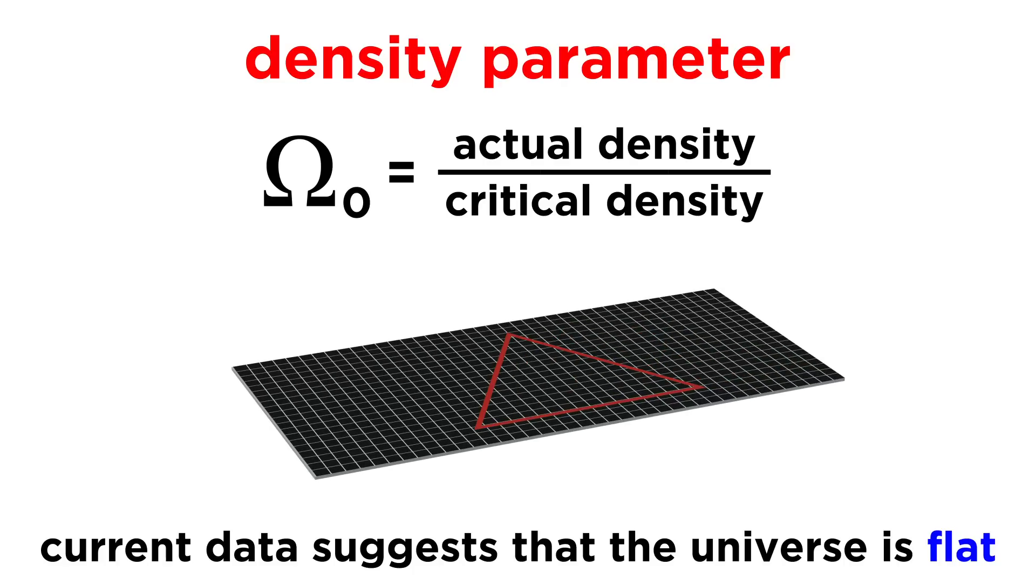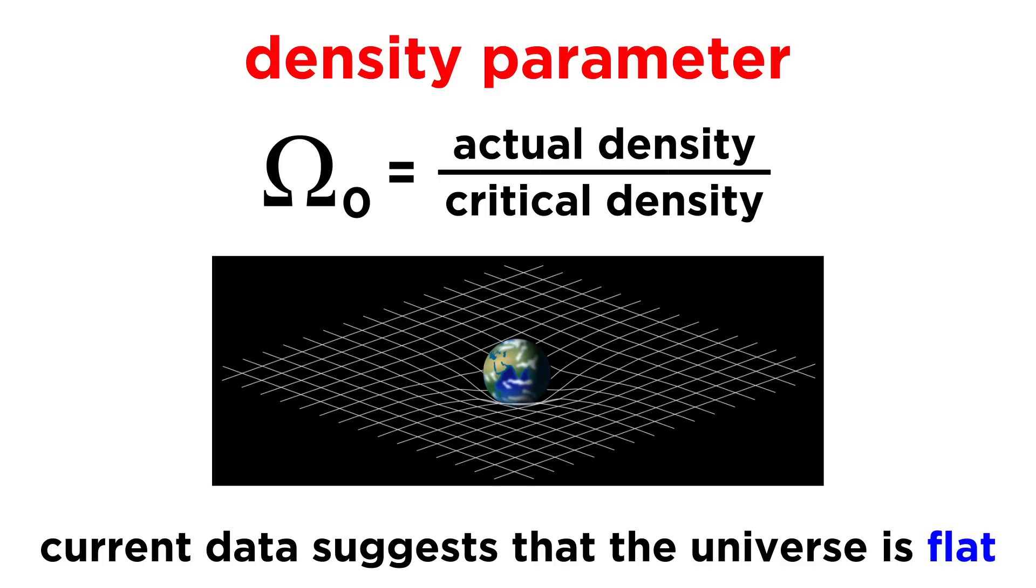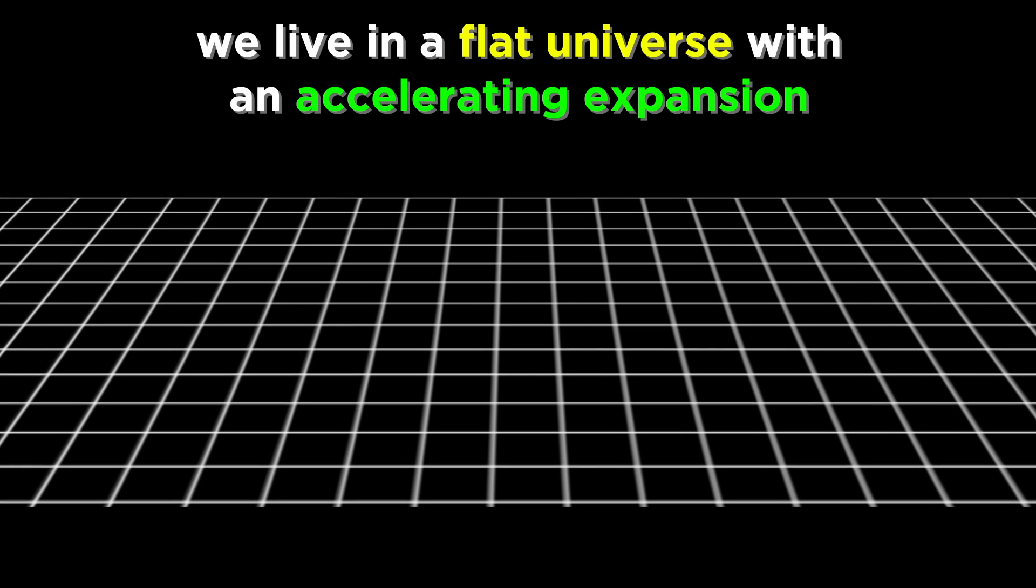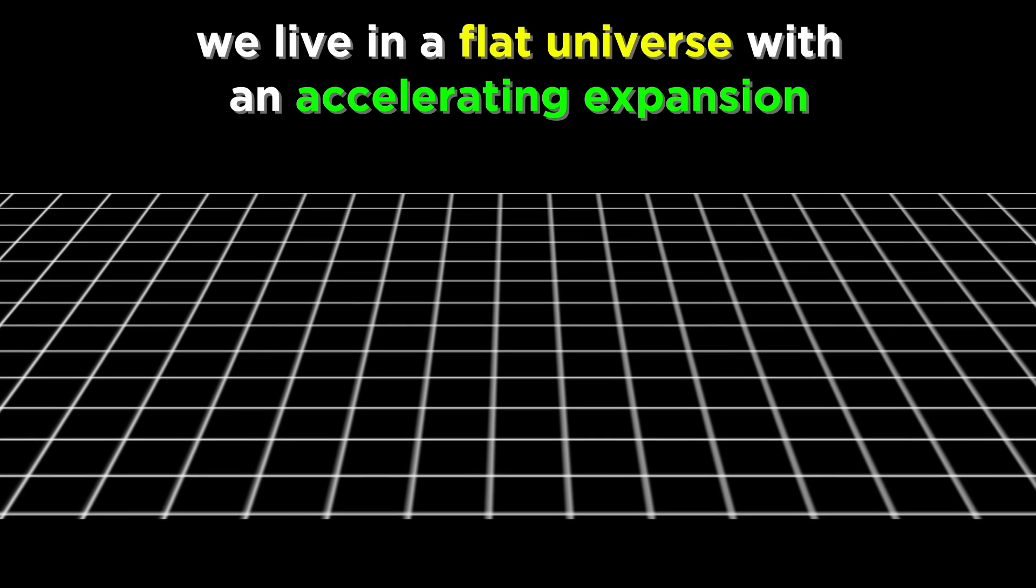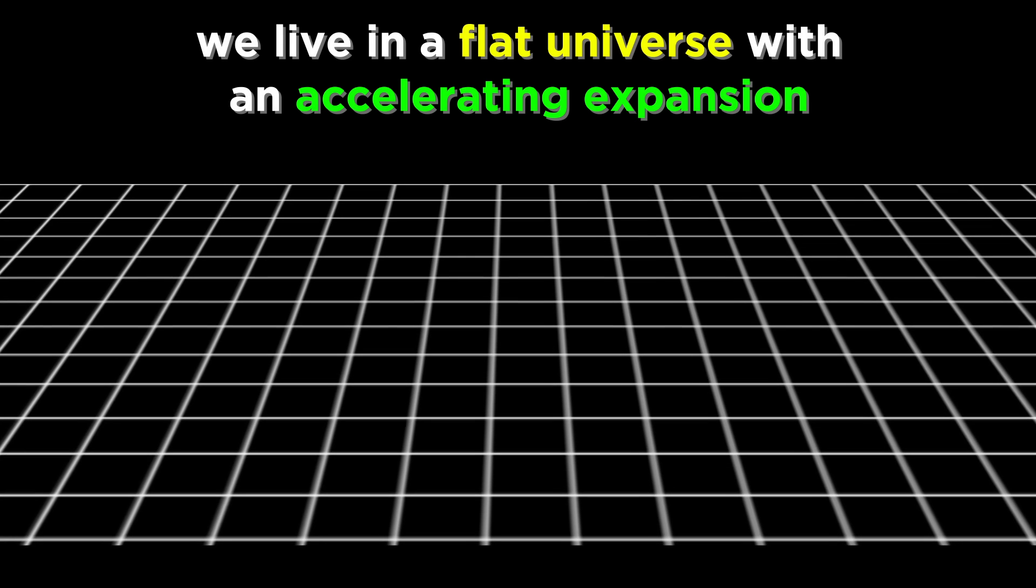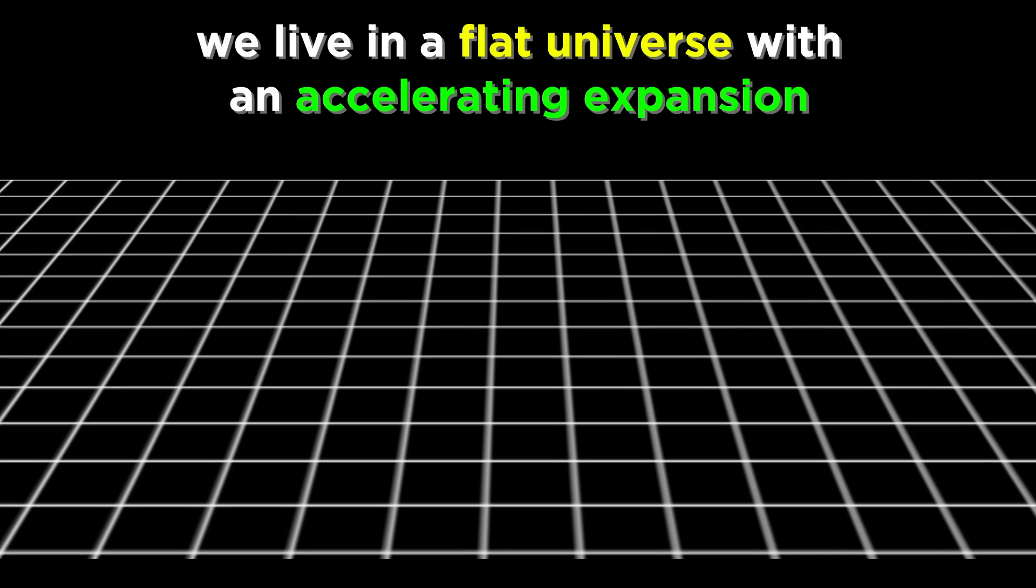Quite incredibly, current data suggests that the universe is flat overall. So despite pronounced curvature around massive objects, if we zoom way out until galaxies are faint specks of light, we should see a flat universe where Euclidean geometry more or less holds true. Integrating this with what we now know about dark matter and dark energy, we are left with a spatially flat universe that has an accelerating expansion.